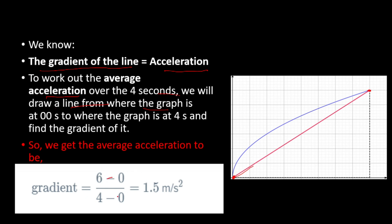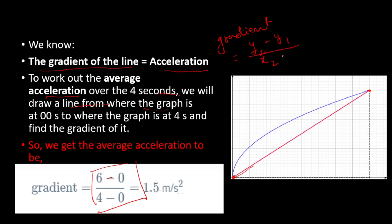The gradient formula is: gradient = (y2 − y1) ÷ (x2 − x1). Using the endpoints: (6 − 0) ÷ (4 − 0) = 1.5 metres per second squared. So the average acceleration over four seconds is 1.5 m/s². This is how we calculate the gradient of a curve.